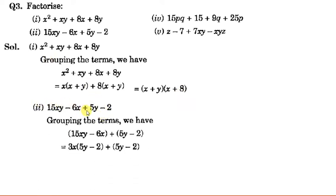Next: 15xy − 6x + 5y − 2. In the first 2 terms, 3 is a common factor of 15 and 6, and x is common in both. But y is only in the first term, not the second, so y cannot be taken common. Taking 3x common: 15xy divided gives 5y, and 6 divided by 3 is 2, so we get 3x(5y − 2).